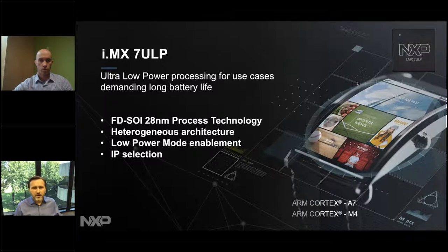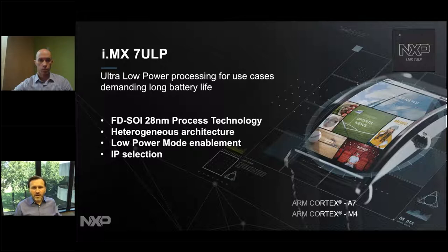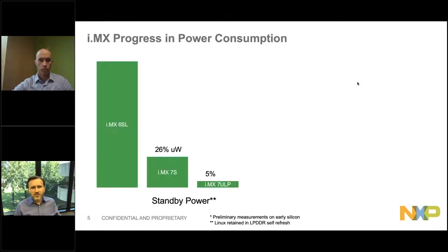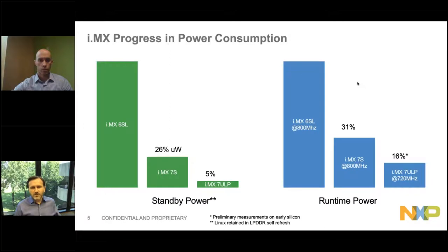We enable everything through hardware and software, optimizing each power mode. We also make sure to give you the right IP and the right connectivity, whether you need performance or can scale back and concentrate on low-power IP. Looking back at the 6 Solo Lite, one of our first low-power processors, you can see a great improvement in standby power. With the 7 Solo we first talked about power efficiency, and now with the 7ULP we're seeing 5% of the standby power that we saw with the 6 Solo Lite — a great improvement, and the same trend with runtime power.